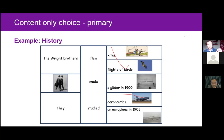All the subjects in the first column agree with the past simple verbs in the middle column. However, learners could still make a sentence that doesn't make sense in terms of content — for example, 'the Wright brothers made flights of birds,' which is grammatically correct but doesn't make sense from a real-world point of view. We've also added pictures to the substitution table to provide further support. This is the least demanding type of substitution table and would be used with the lowest proficiency learners.